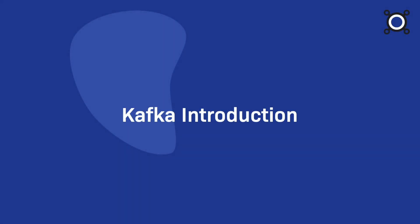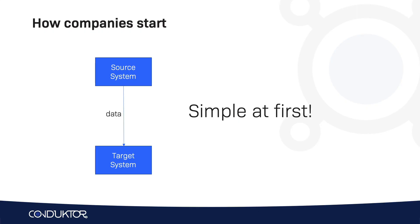Hello, this is Stefan Marek from Conductor. Let's start this course by doing a small Kafka introduction. When you start with your company, it's very simple. You have your source system and you have your target system, and maybe you need to move data between them. For example, your source system is a database and your target system is an analytics system, and you want to move data from A to B. You just create an integration.